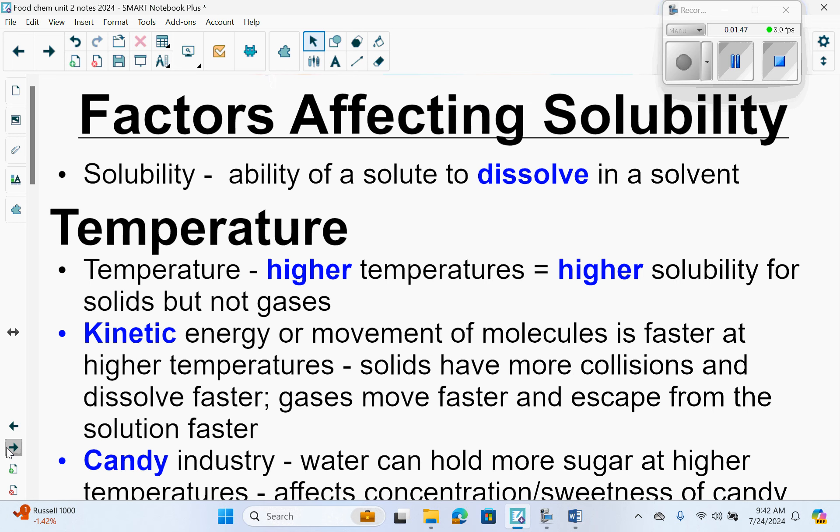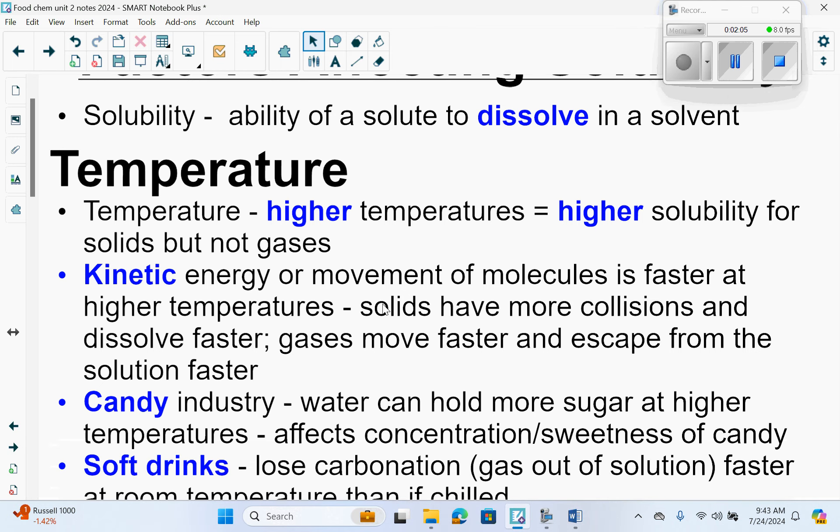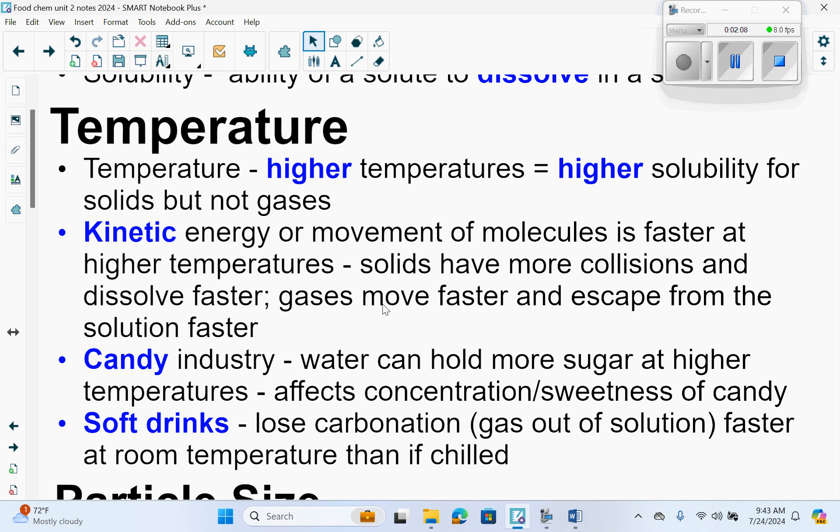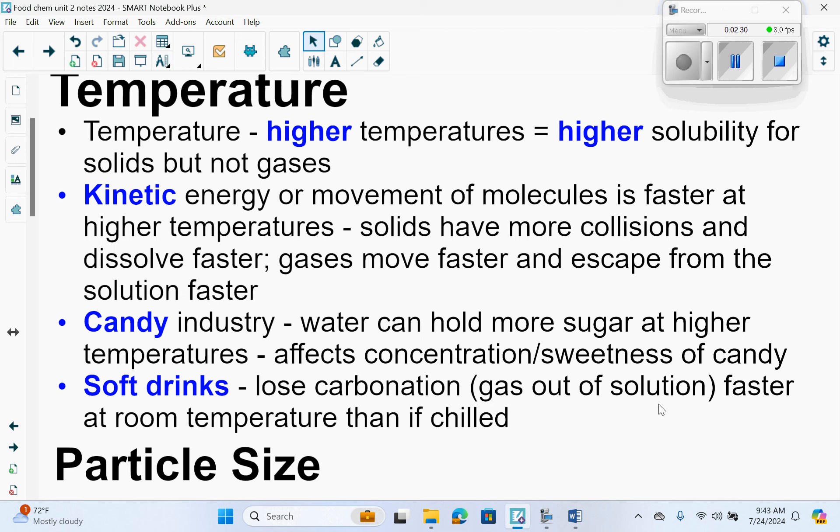There are factors affecting solubility, which is the ability of a solute to dissolve in a solvent. The first factor is temperature. The higher the temperature, the higher the solubility for solids, not gases. Temperature is a measure of kinetic energy, and kinetic energy or movement of molecules is faster at higher temperatures. Solids have more collisions and dissolve faster. Gases move faster but escape from solution faster. In the candy industry, water can hold more sugar at higher temperatures, and this affects the concentration and sweetness of candy.